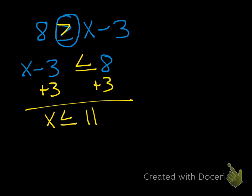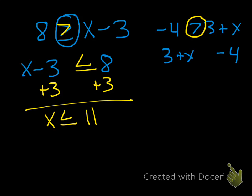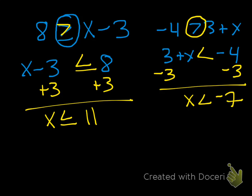Let's do the second one. We have negative 4 is greater than 3 plus x. We're just going to switch them: 3 plus x on the left and negative 4 on the right, and make sure the sign is oriented the same way — the small side was pointing to the 3 plus x, so it has to do the same. Now we solve: minus 3, minus 3, so x is less than negative 7.